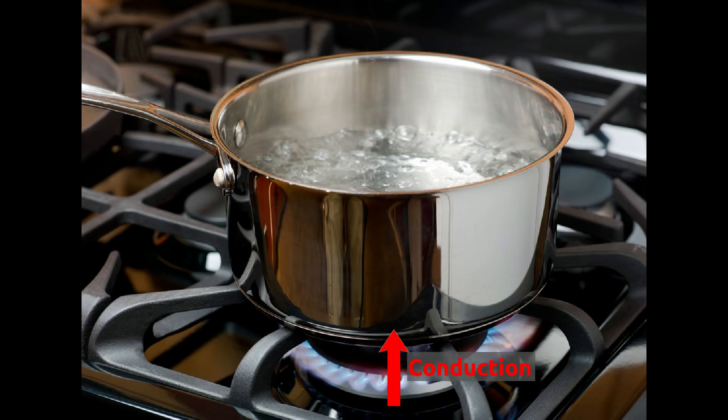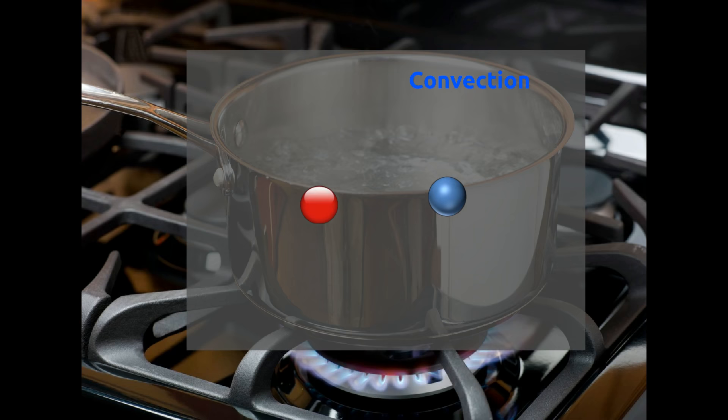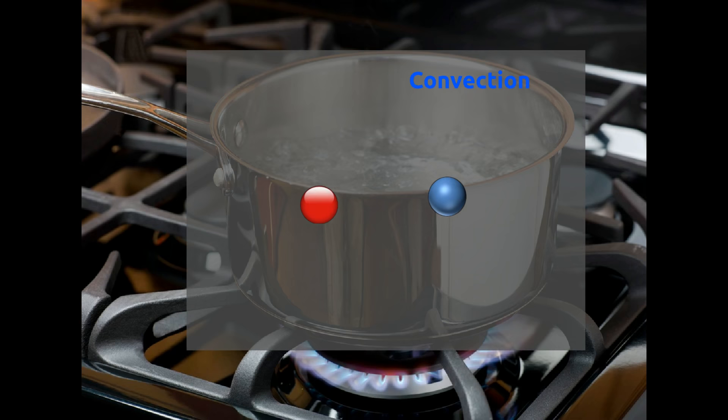Let's take an example of boiling water on a stove. From the stove, heat conducts to the pot as it is directly in contact. Due to convection, all the water particles receive heat. If you bring your hand very close to the side of the pot, you will feel a little hotness. This is because radiation is coming from the pot.